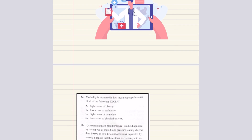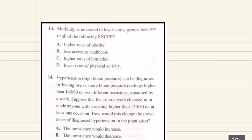Problem thirteen: morbidity is increased in low income groups because of all of the following except blank. Morbidity refers to the burden or severity of disease. All of the listed factors — higher rates of obesity, less access to health care, and lower rates of physical activity — are true for low socioeconomic status populations, except high rates of homicide. High homicide rates cause an increase in mortality, not morbidity. So the correct answer for thirteen is C.